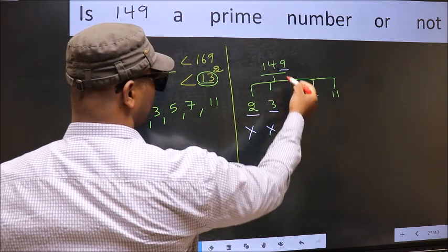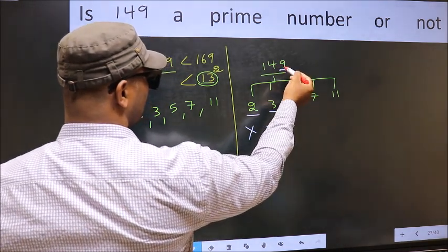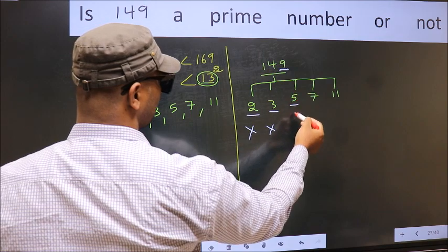Next number 5. Last digit is neither 0 nor 5, so this is not divisible by 5.